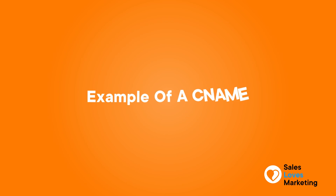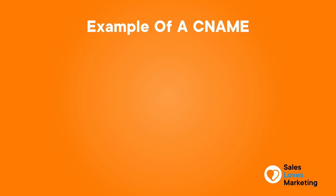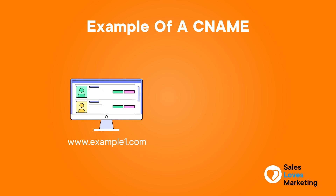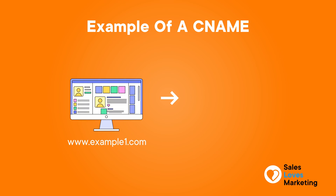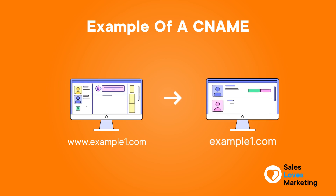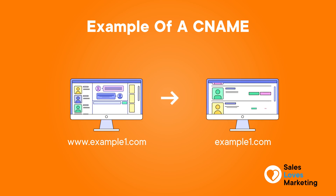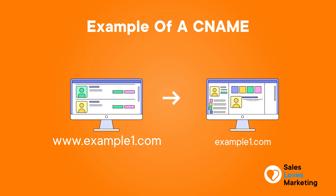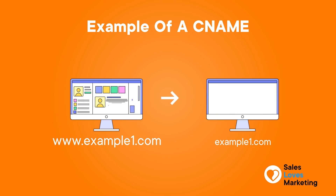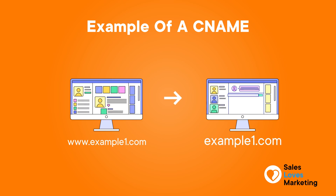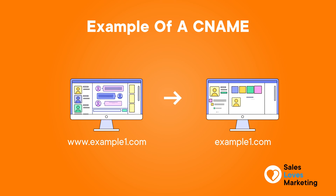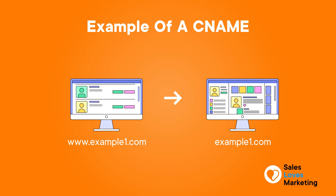An easily understood example of a CNAME record can be mapping the web address www.example1.com to the actual website for the domain example1.com. This means that www.example1.com and example1.com are connected to each other, thanks to the CNAME record.